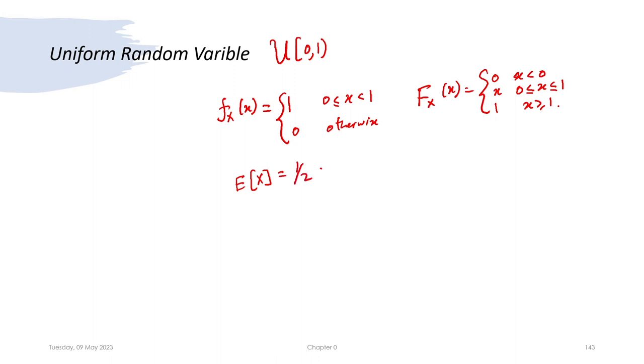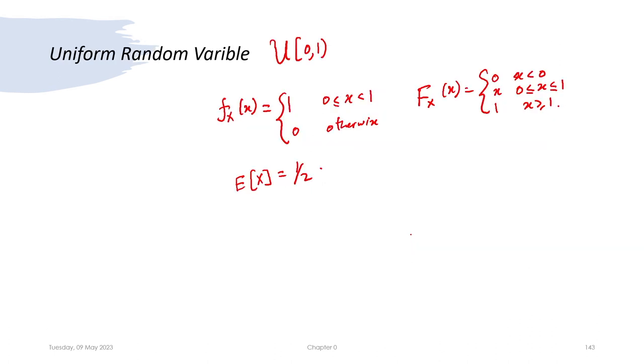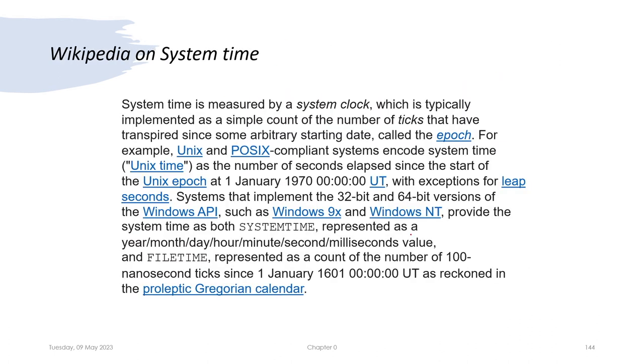A uniform random variable basically means it takes any value between 0 and 1. In MATLAB, you can generate a uniform random variable using the rand command. Unless specified, MATLAB uses system time as the seed. Let us look at what system time is before we implement this.